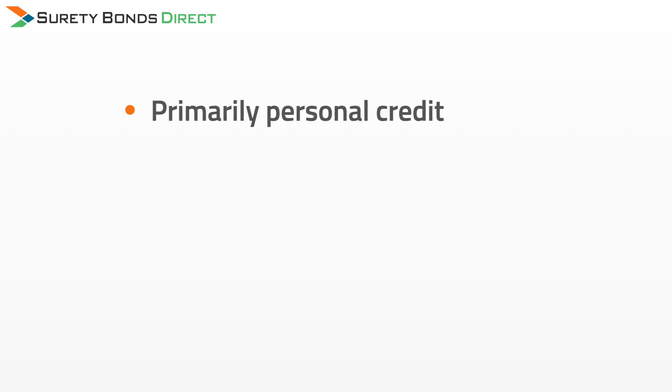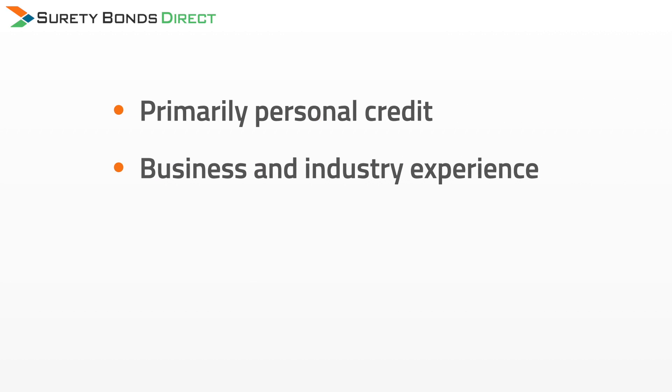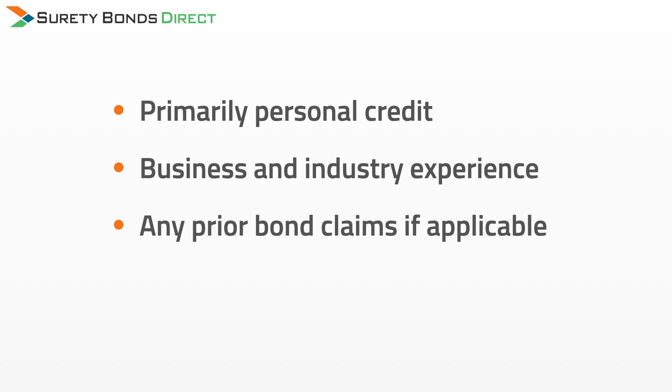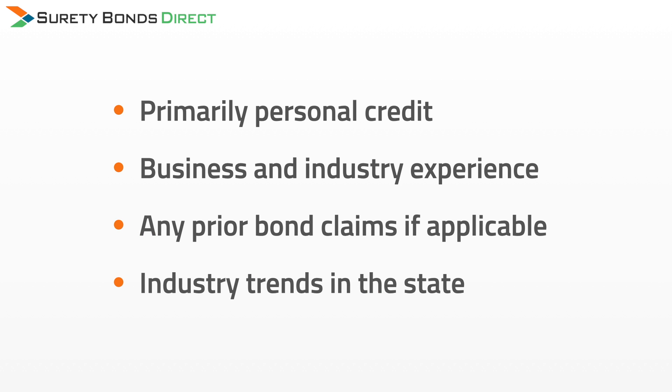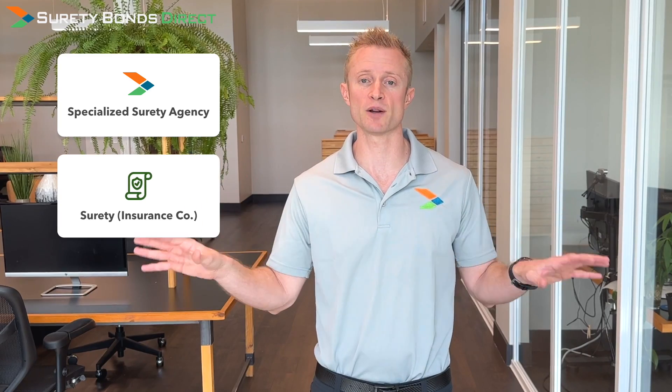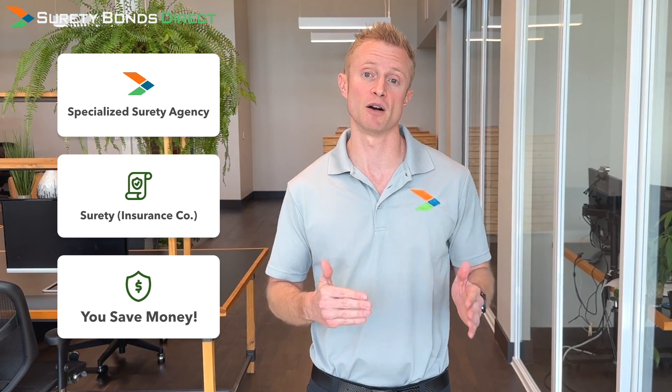The surety is the insurance company that underwrites surety bonds, and they use primarily three factors to determine a rate: personal credit, business and industry experience, any prior bond claims from previous bonds, and industry trends in the state. This rate multiplied by your bond amount is the price you pay. Working with a specialized surety agency like Surety Bonds Direct can save you hundreds of dollars, because they work with multiple A-rated sureties, allowing them to price shop and find the lowest possible rate.